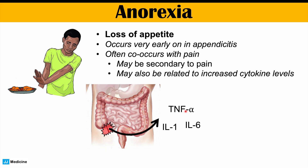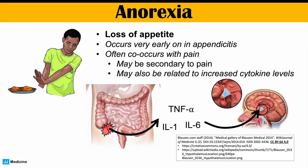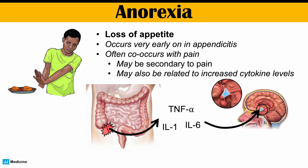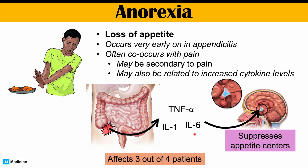When the appendix is inflamed, inflammation leads to an immune response that causes increased levels of immune system cytokines, including tumor necrosis factor alpha (TNF-alpha), interleukin-1 (IL-1), and IL-6. These are going to travel through the bloodstream and enter a part of the brain called the hypothalamus. These cytokines can act on the hypothalamus to suppress appetite centers, which can be the reason why, even before some of that vague pain starts, patients can start to have a suppression of their appetite. This is an important finding that affects three out of four patients.